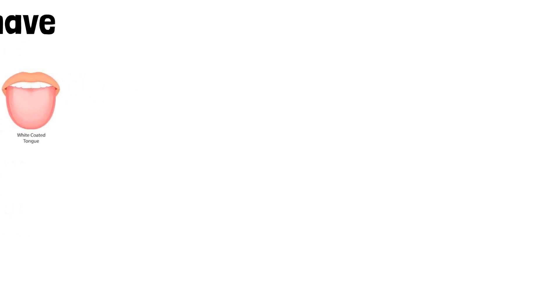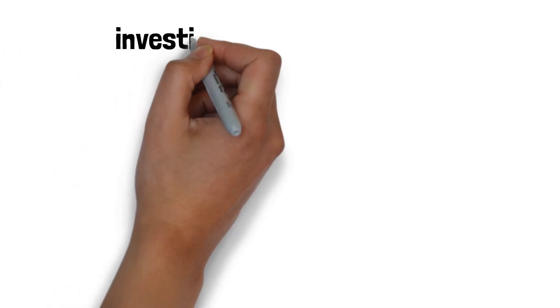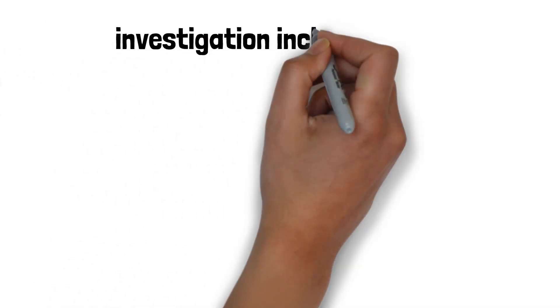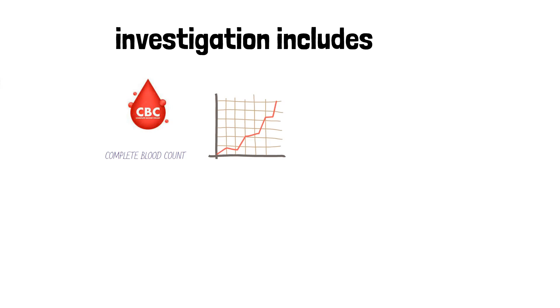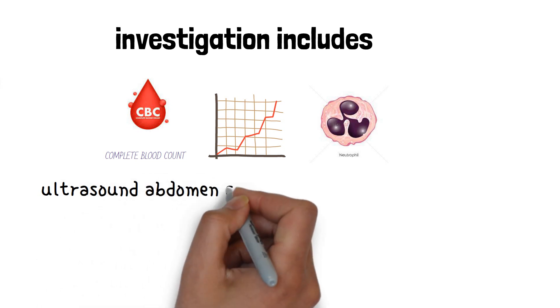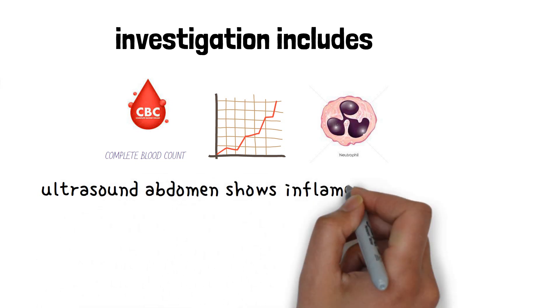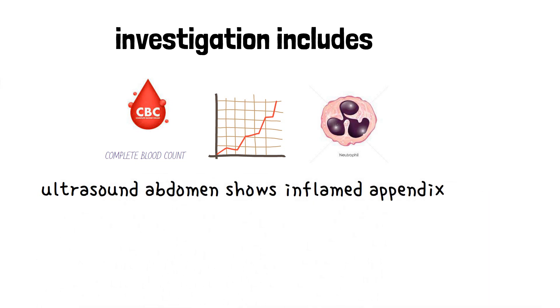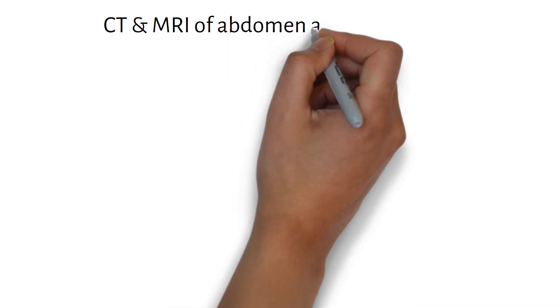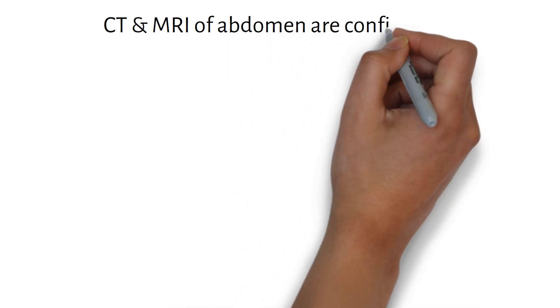Now we will look at investigations. On WBC we will see increased neutrophil counts. On ultrasound of the abdomen, we can see the inflamed appendix. CT and MRI of the abdomen are confirmatory tests.